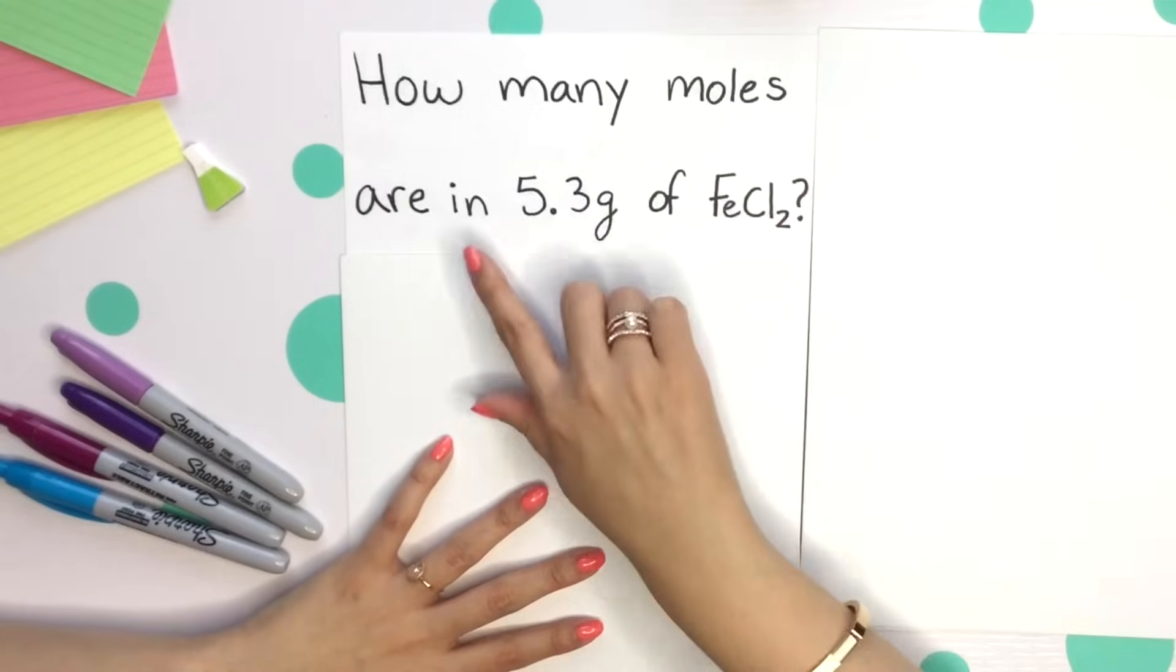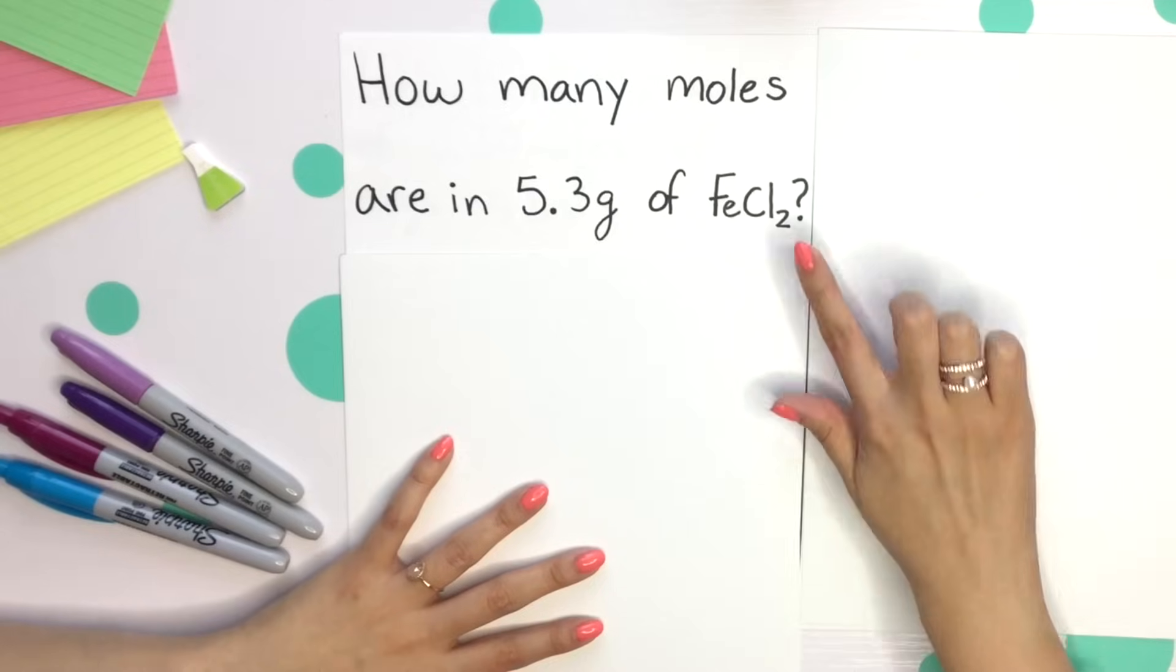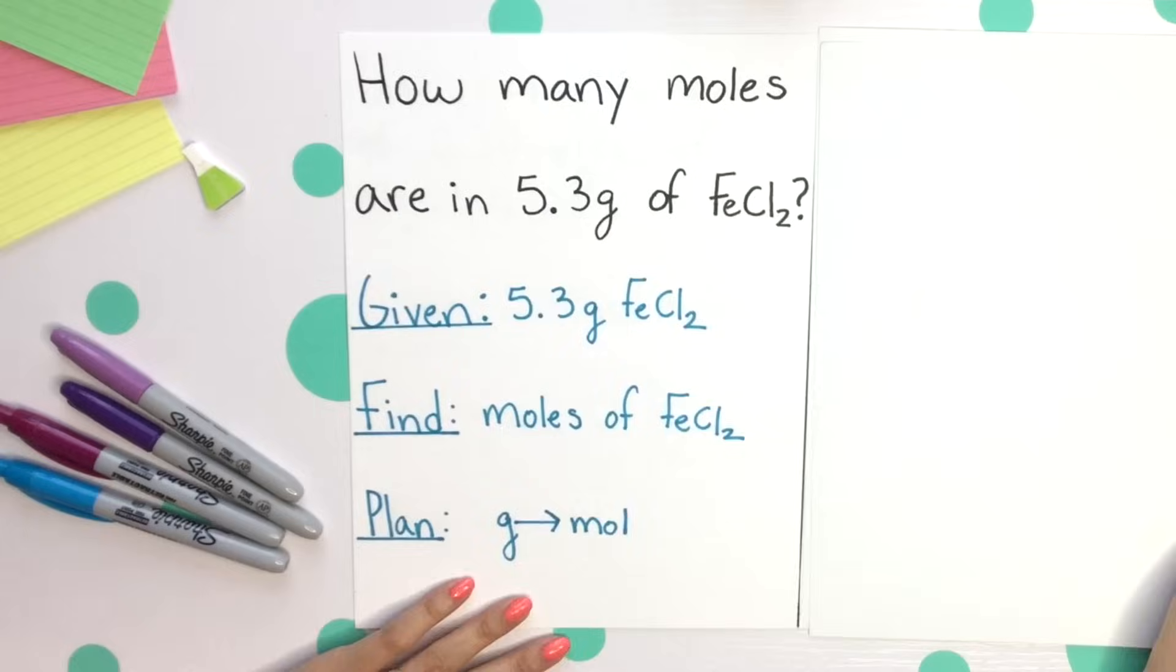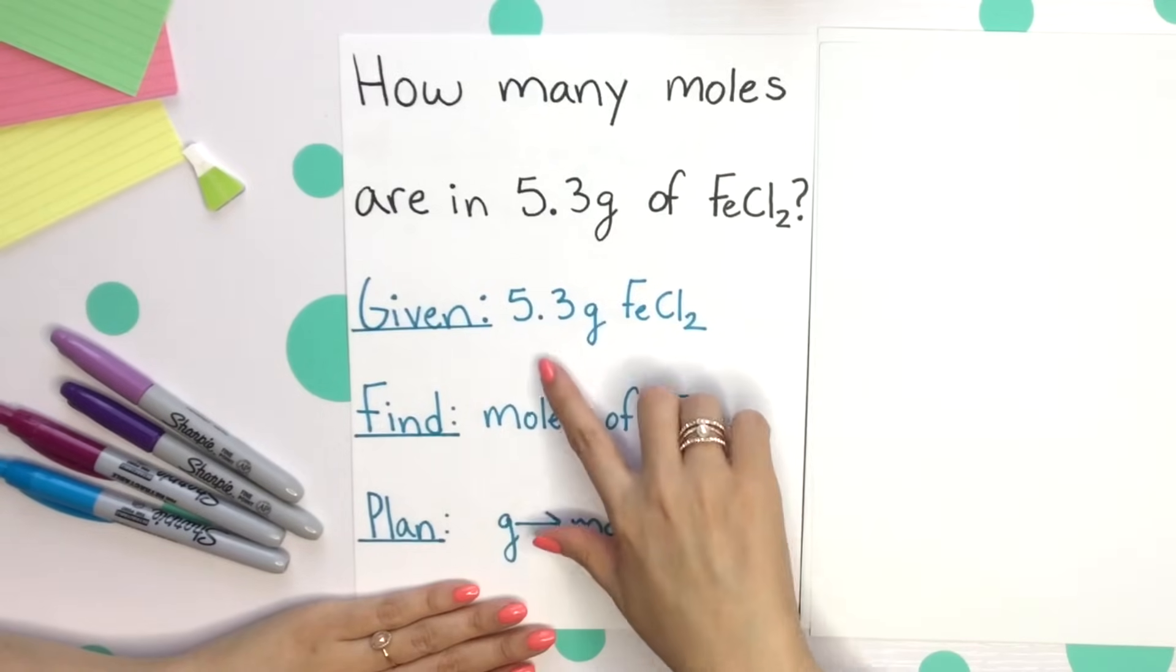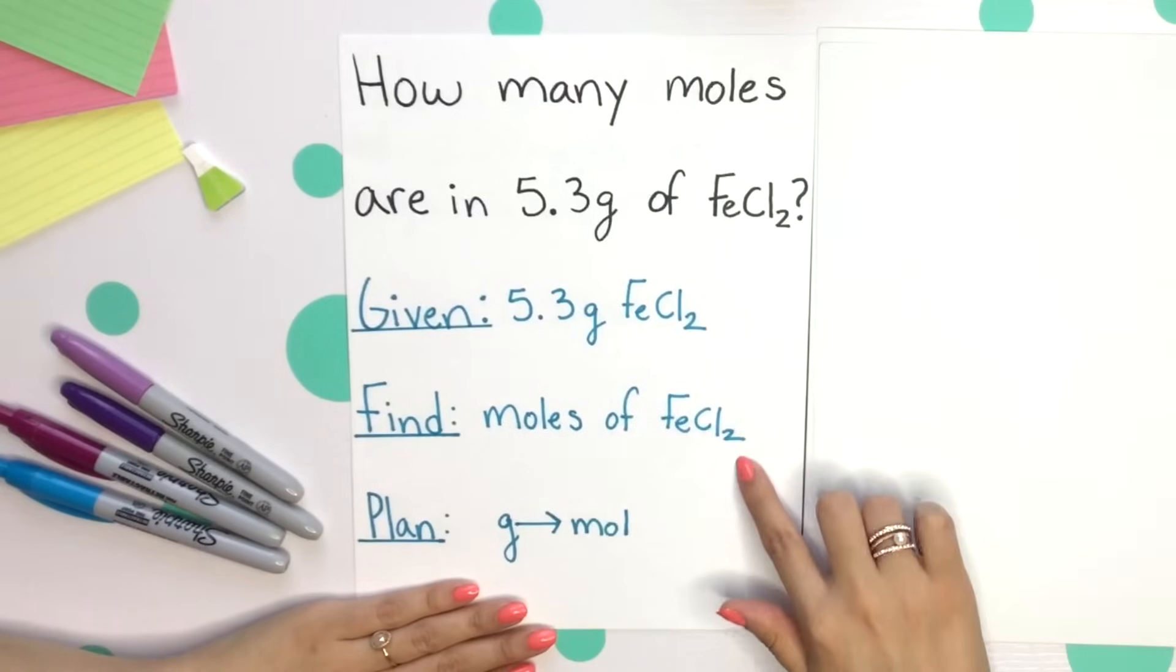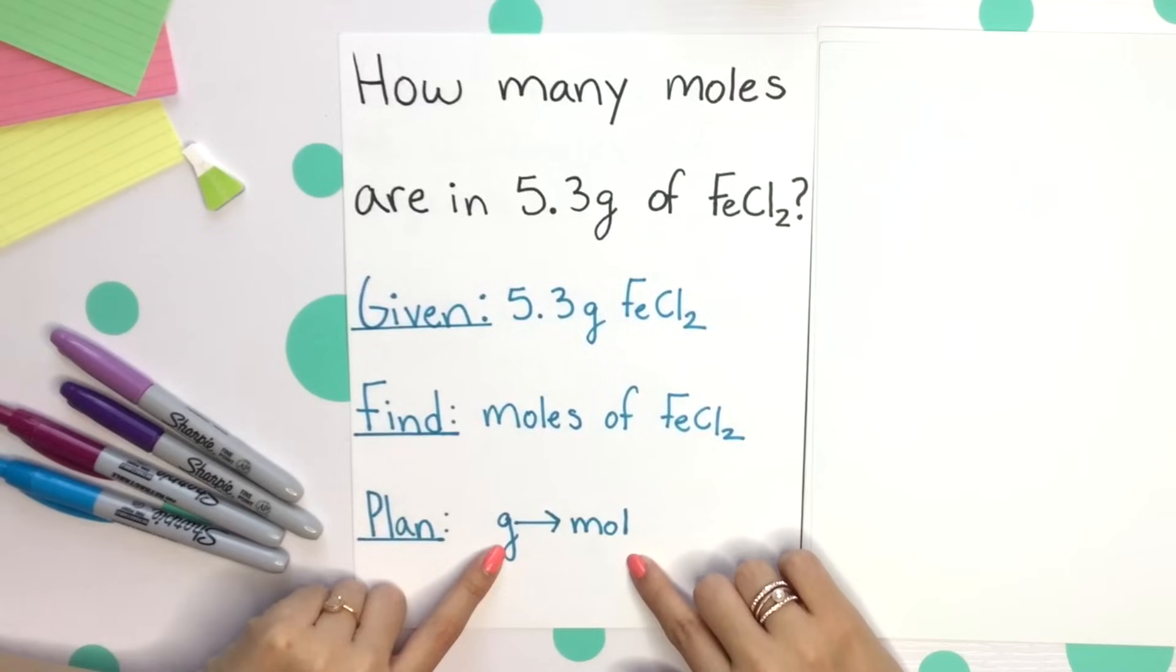Let's get into our example, and we'll convert grams to moles. How many moles are in 5.3 grams of iron chloride? Always identifying your given, what you're finding, and our plan. Your given is 5.3 grams iron chloride. We're going to moles of iron chloride. Our plan is just converting from grams to moles, and as we stated, you always use molar mass as a conversion factor whenever you're going from grams to moles.